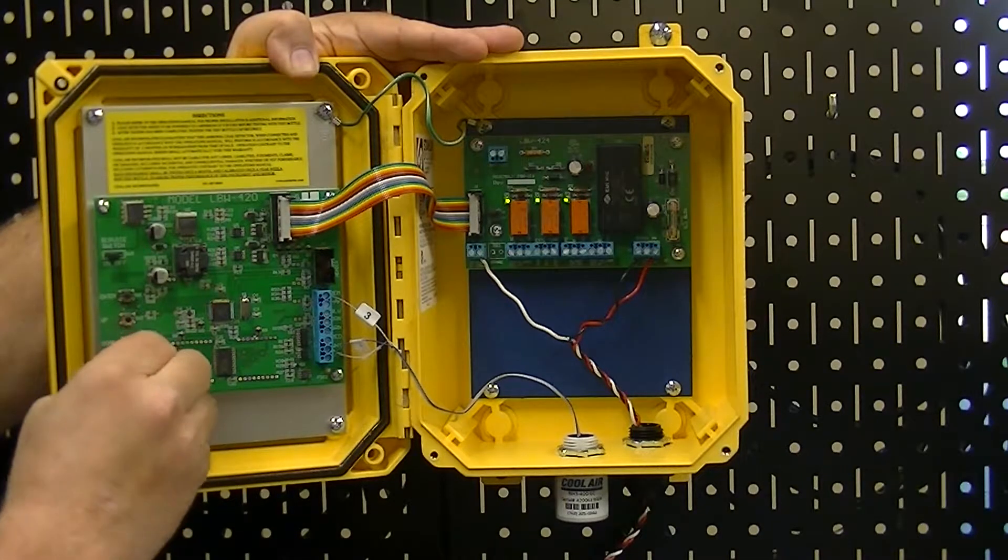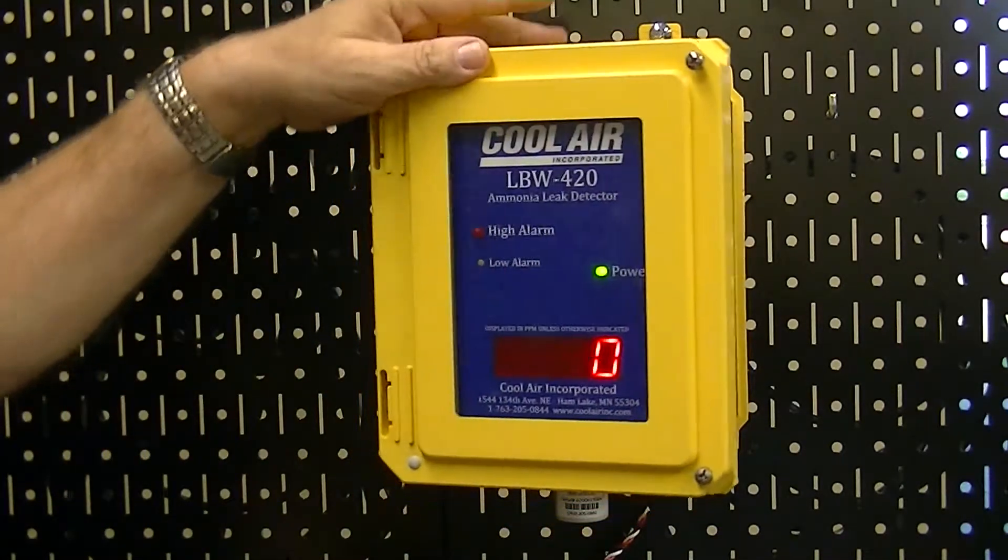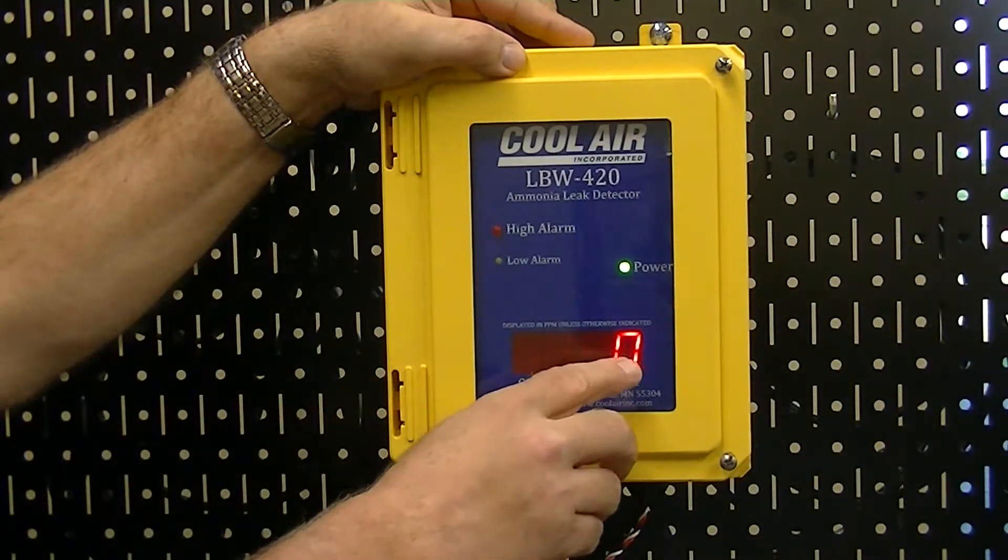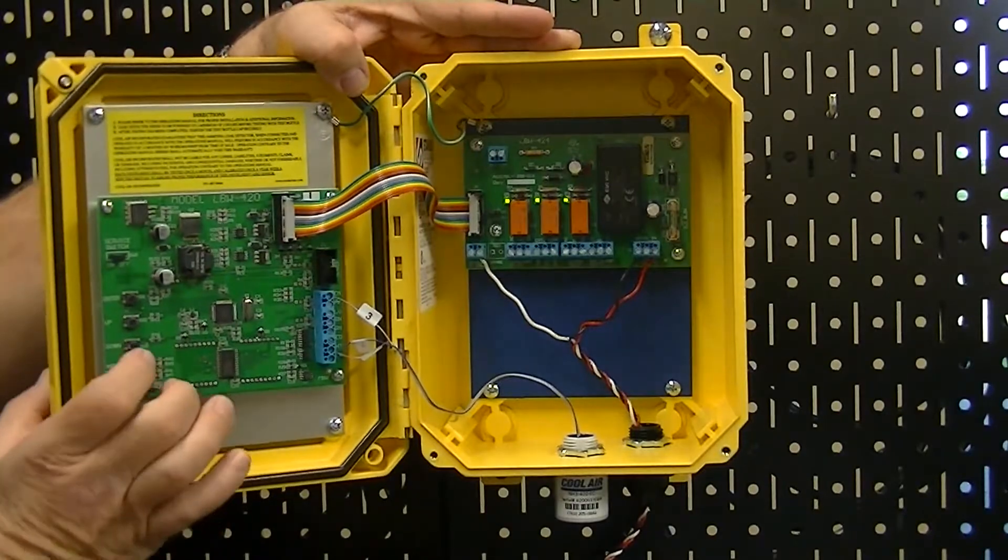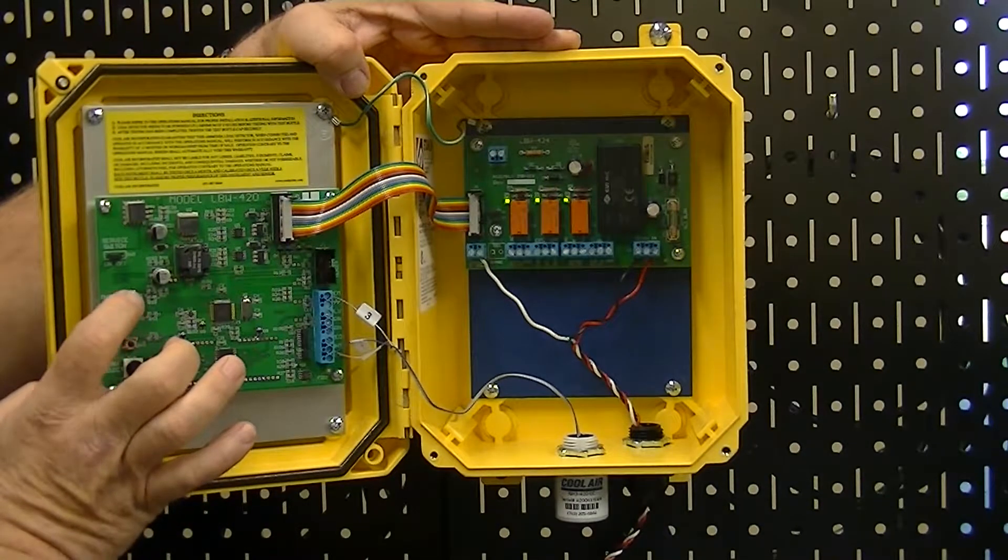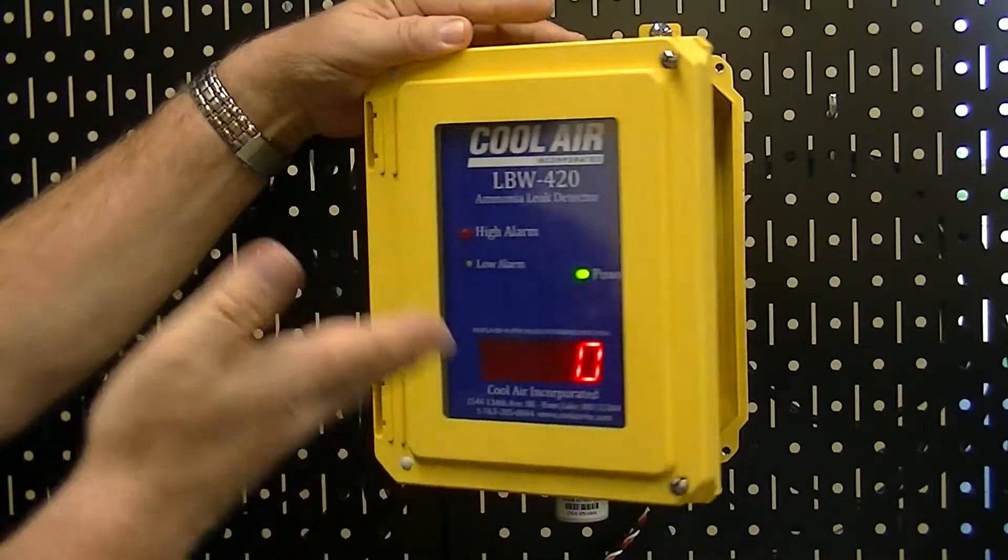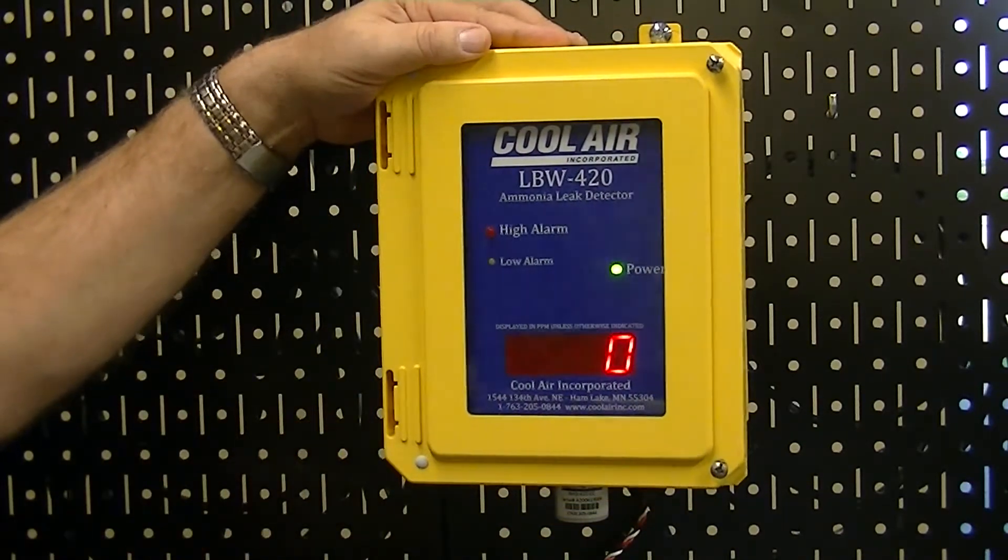We're going to go to position two. The zero offset would need to be adjusted if this was anything other than zero. We're going to hit the enter button for two seconds and that would have taken it to zero if it was reading anything other than zero.